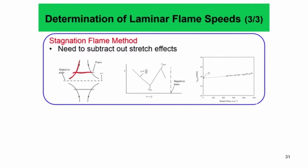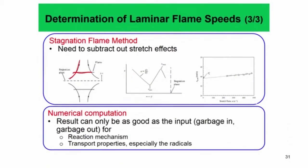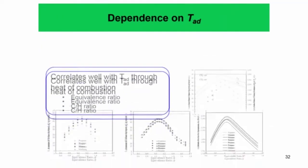People have spent a lot of effort in estimating the planar laminar flame speed by different methods and trying to improve their accuracy over time. Nowadays people either use the spherical flame method, the stretch flame method, or counter-flow flames to estimate the planar laminar flame speed. The results are used for validating reaction mechanisms and transport properties, especially for radicals.